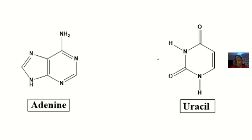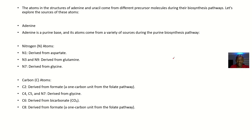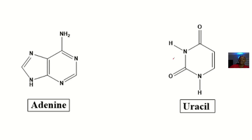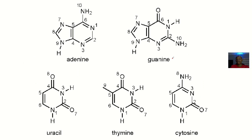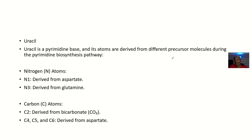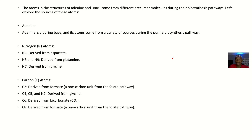That's something they will never teach you in medical school unless you have been reading widely. So let's look at the sources. For adenine, we'll talk about the nitrogen atoms and their sources, then the carbon atoms and their sources. Then for uracil, we'll talk about all the nitrogen atoms and their sources, and also the carbon atoms and their sources. The atoms in the structure of adenine and uracil come from different precursor molecules during their biosynthesis pathways.